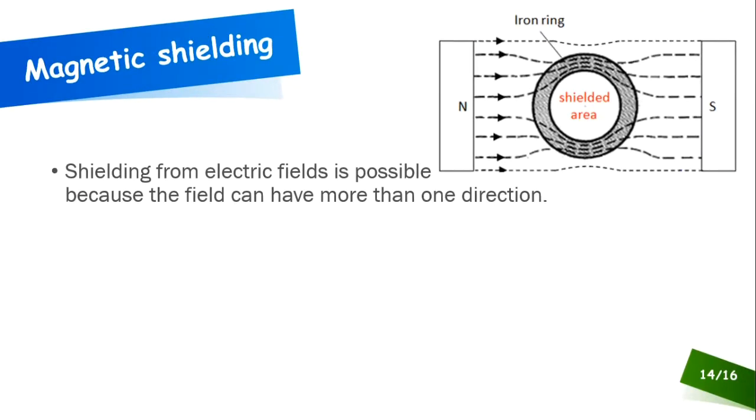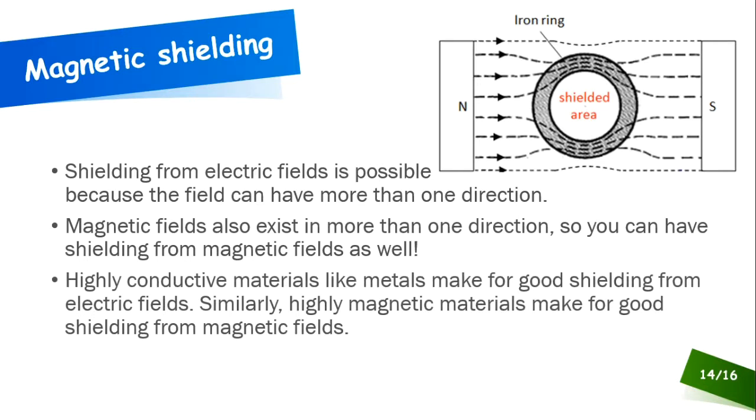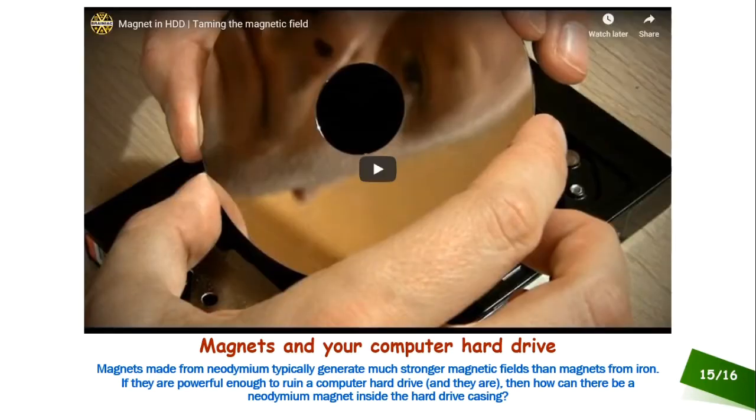We saw that shielding was possible with electric fields. That's because the electric field can move in more than one direction. Magnetic fields can do the same thing. They can move in more than one direction. Therefore, magnetic shielding is possible. Just like you had electric shielding, you can have magnetic shielding. It's the same basic principle. If you want to shield something electrically, you need to put it inside something that's electrically conductive. Same thing with magnetic shielding. If you want to shield something from a magnetic field, you need to put it in something that can actually conduct a magnetic field. Highly magnetic materials make good shields from magnetic fields.